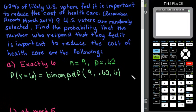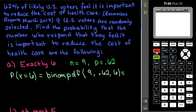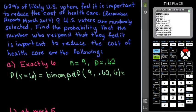We plug in binomPDF with N=9, P=0.62, X=6. To get this, hit the second and the VARS button — above it, it says distributions. This is where all of the probability distributions are. Scroll until you find binomPDF. In this case, it happens to be option A. Some calculators may be different because there are some missing in the TI-83 and some older TI-84s, so just scroll through until you find binomPDF.